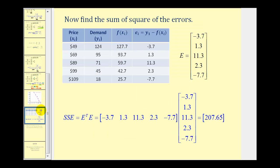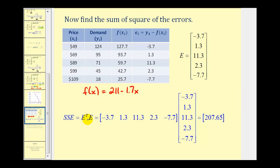We're also asked to find the sum of the squares of the errors. I recommend creating a table where the first column is the given x values, the second column is the given y values, the third column is the predicted values from f(x) = 211 − 1.7x, and the fourth column is the error: y sub i minus f(x sub i). These errors form matrix E. The sum of the squared errors is E^T times E, where matrix E is a column matrix and its transpose is a row matrix. This product equals 207.65.